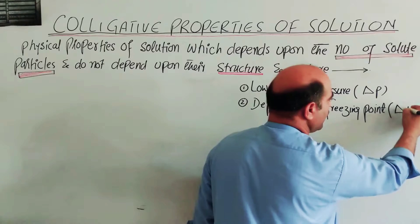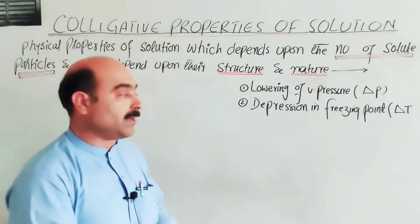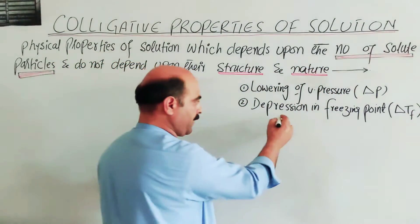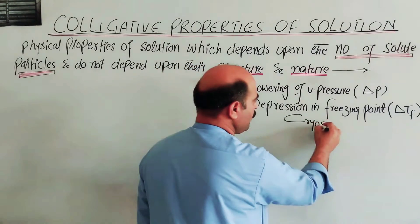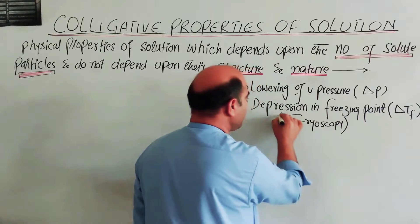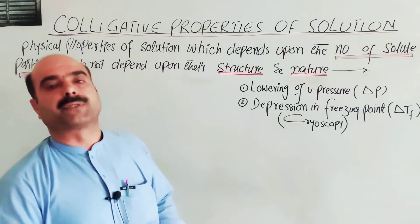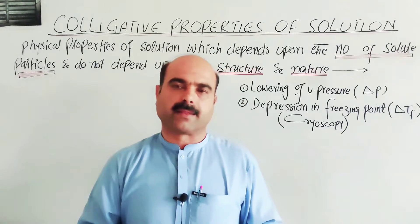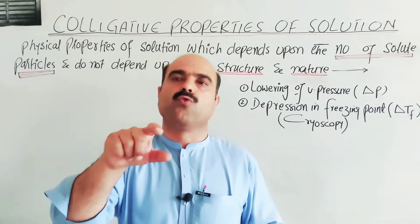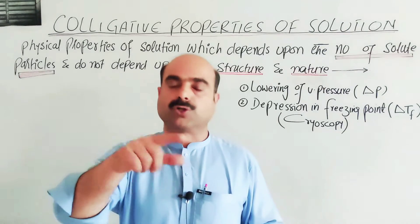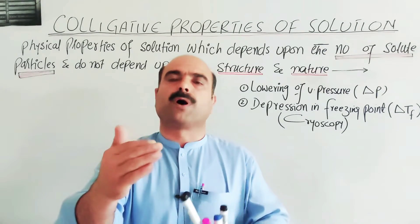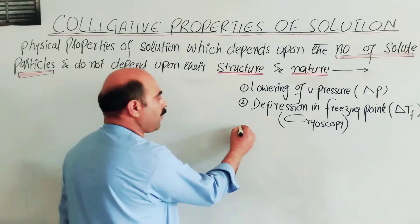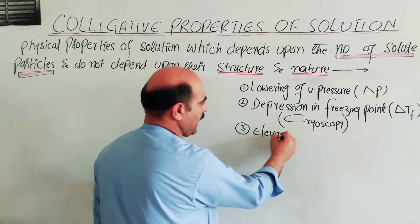The depression in freezing point is also known as cryoscopy. For example, the freezing point of pure water is zero degrees C. When we dissolve one mole of solute in water, the freezing point of the solution drops below zero. This decrease is called depression in freezing point.